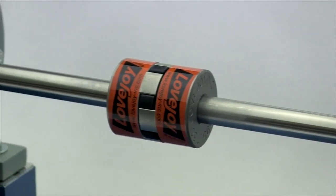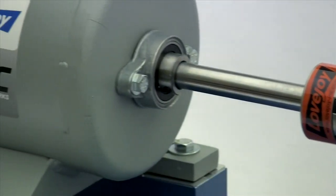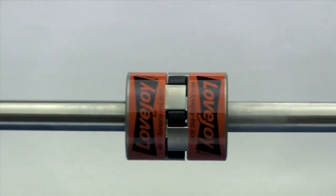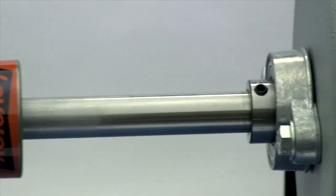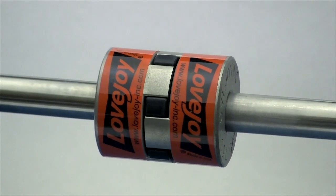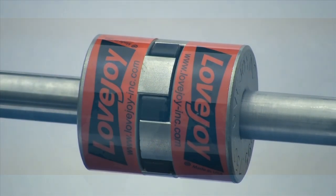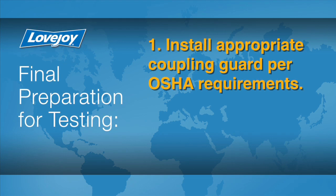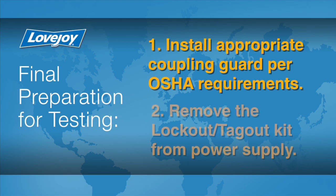When the installation is complete and the equipment is aligned to within the specification, remove the tooling and materials away from the shafting and coupling. Double check tightness for all set screws with a calibrated torque wrench, then prepare for testing. Install the appropriate coupling guard per OSHA requirements and remove the lockout tagout kit from the power supply.